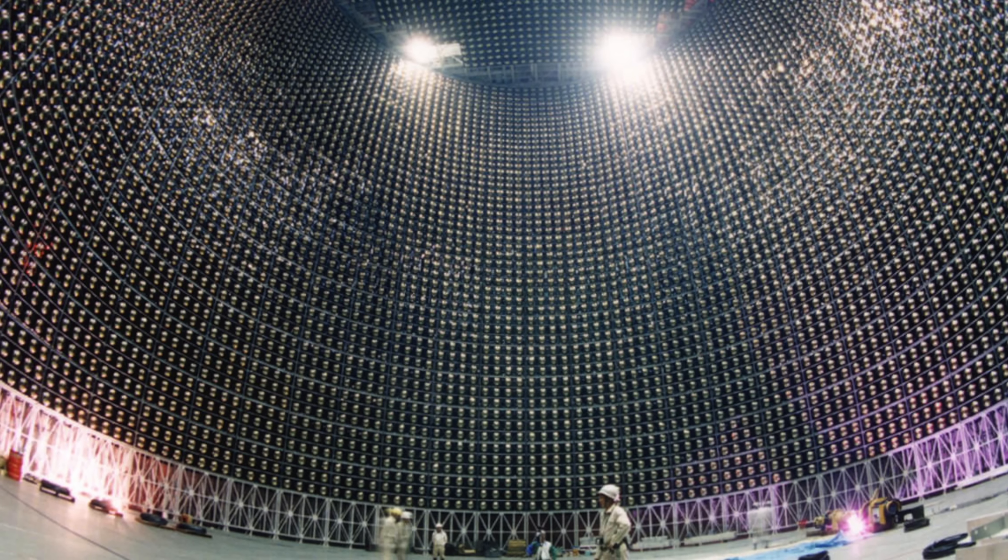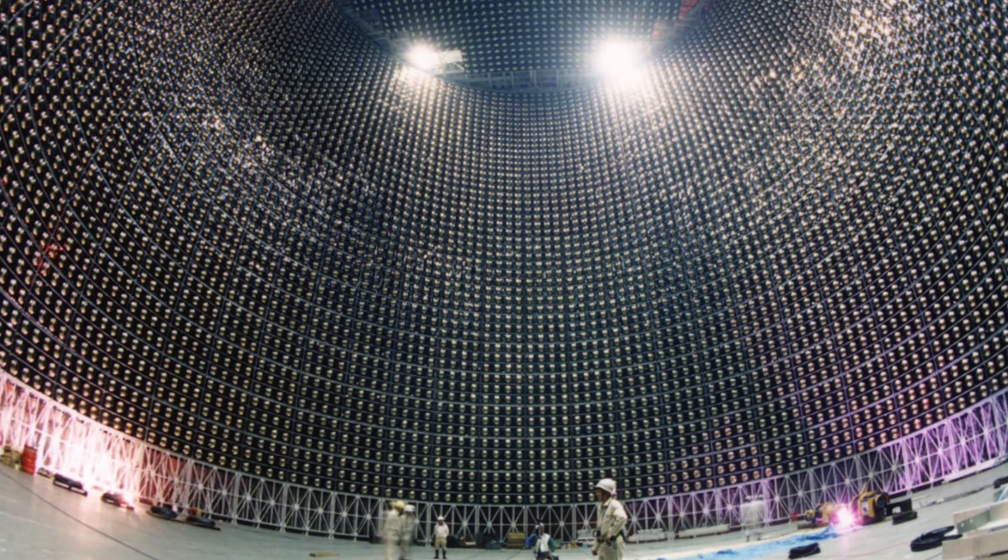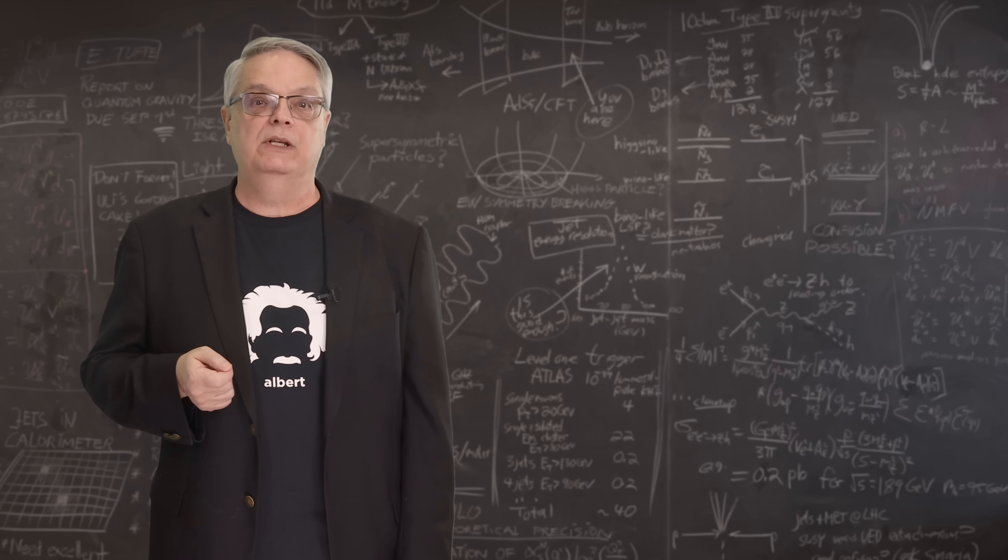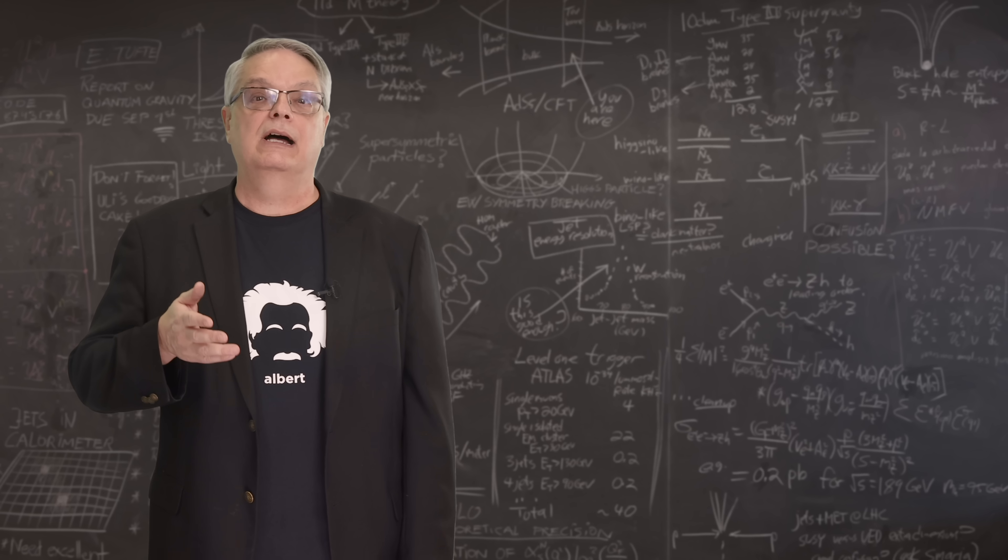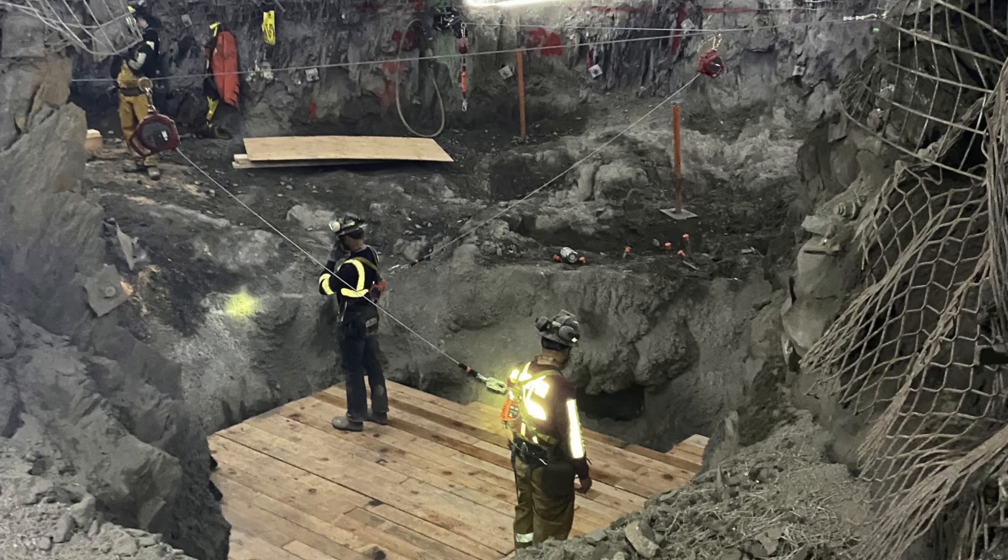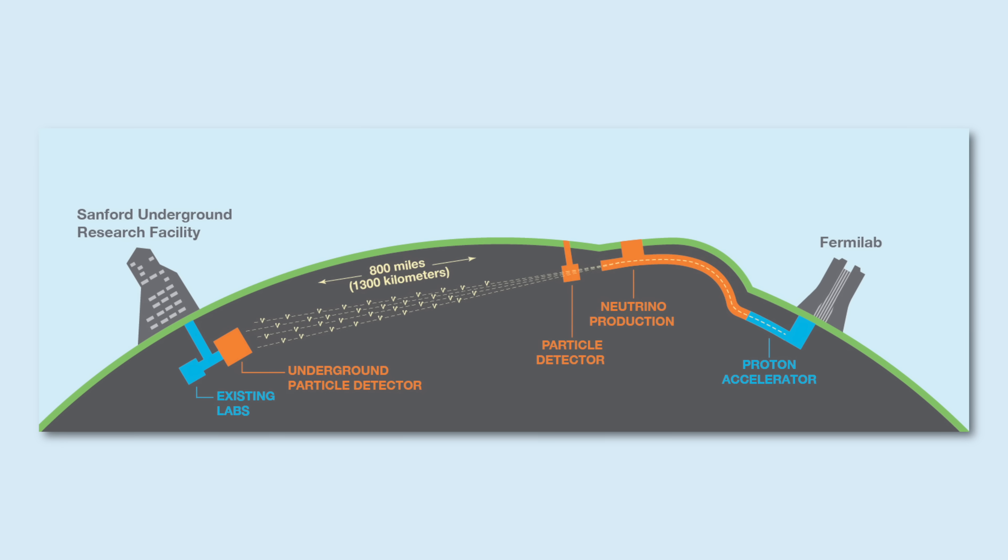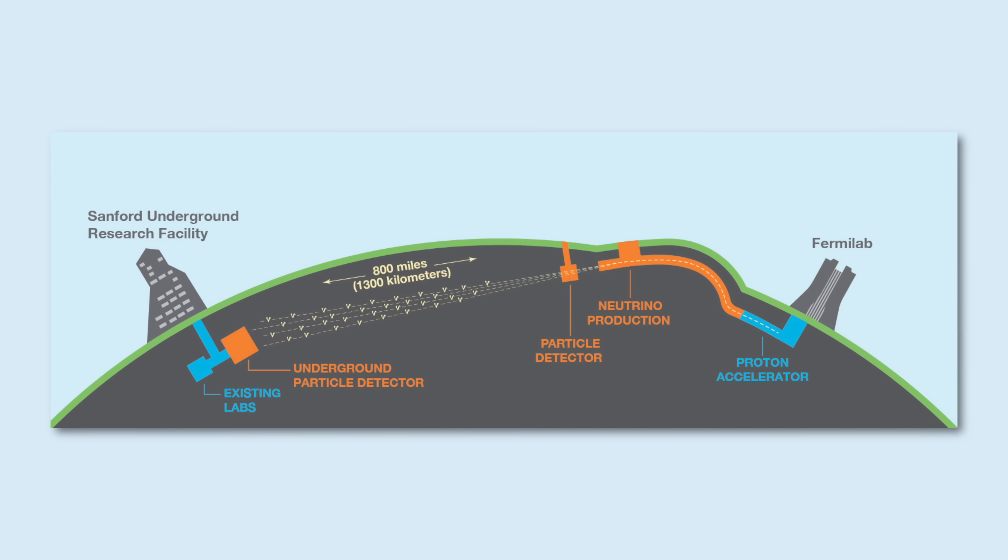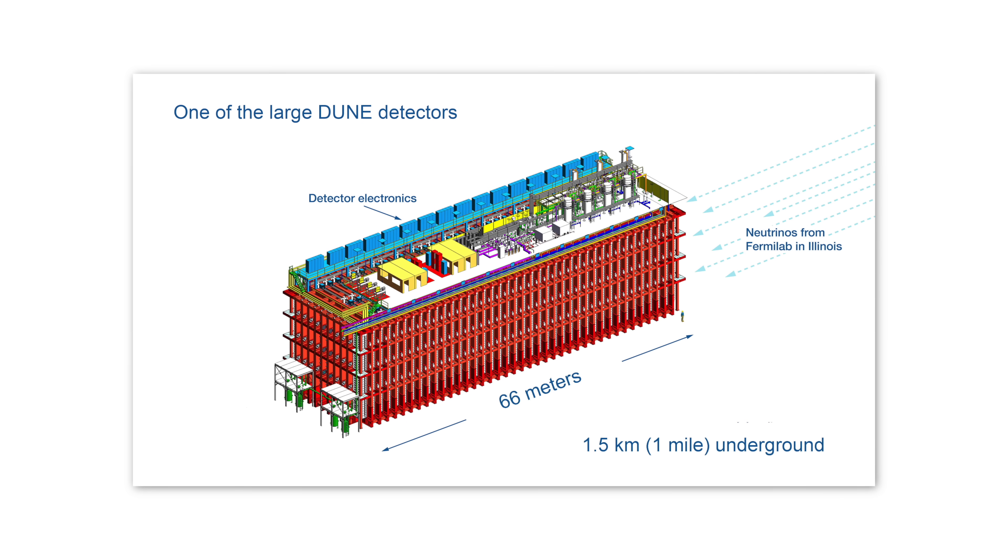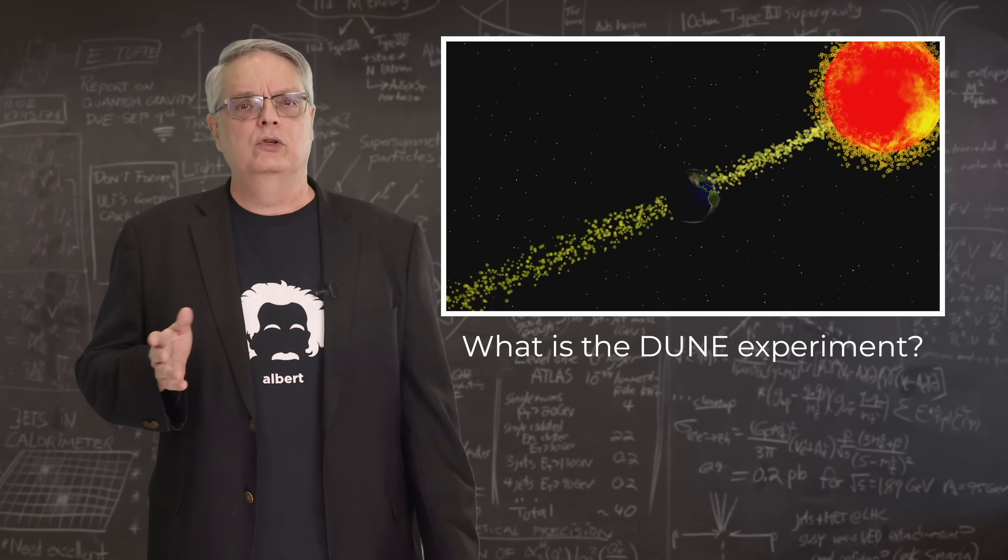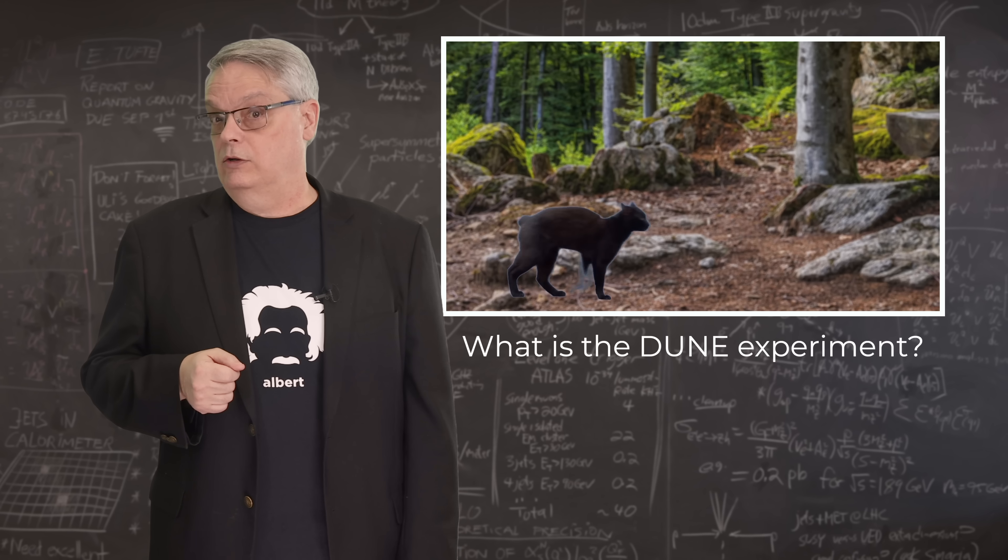For instance, there is the Super Kamiokande experiment in Japan, which is a tank containing 50,000 tons of ultra-pure water. And the Japanese scientific community is building an improvement called Hyper Kamiokande, which will be five times bigger still. And of course, here at Fermilab, my colleagues are building the deep underground neutrino detector, or DUNE. DUNE will consist of about 70,000 tons of liquid argon, and it's being built to study the behavior of neutrinos and antimatter neutrinos generated at Fermilab. I made a video about the DUNE experiment, and I put a link in the description if you want to learn more about it.